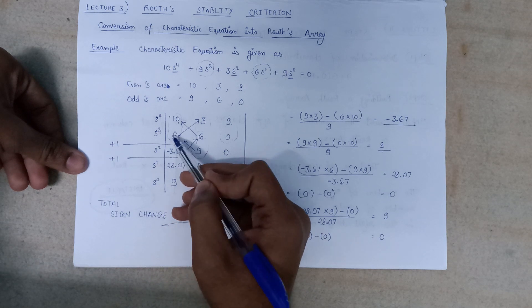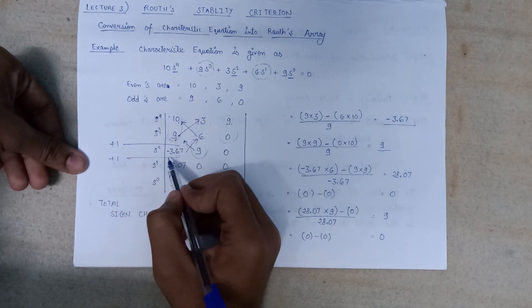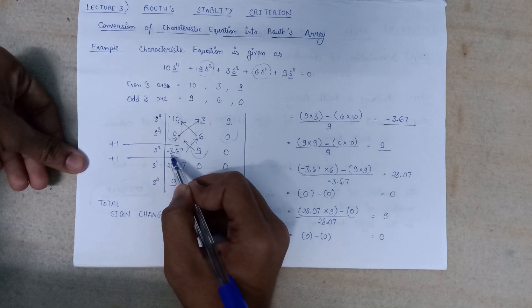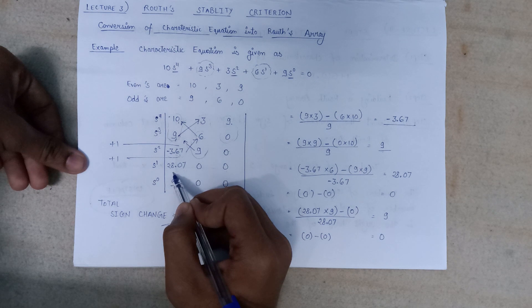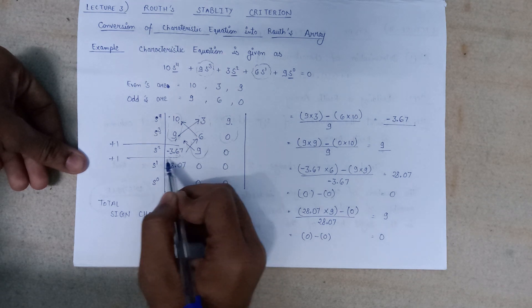After that, minus 3.67 is a negative number and 28.07 is a positive number. So there is again one sign change.